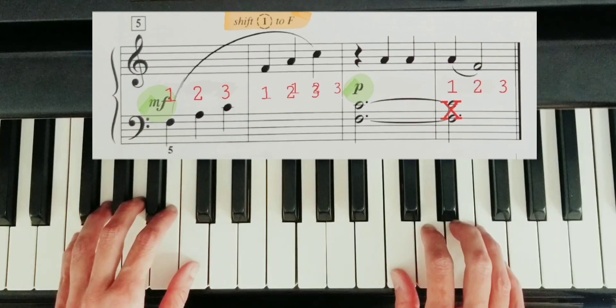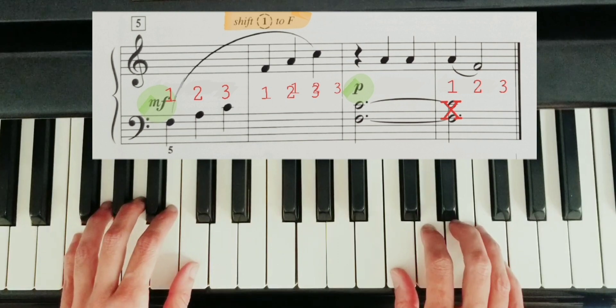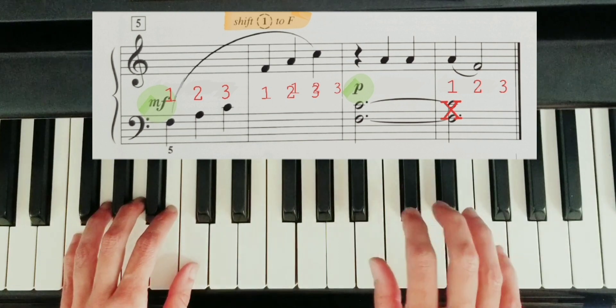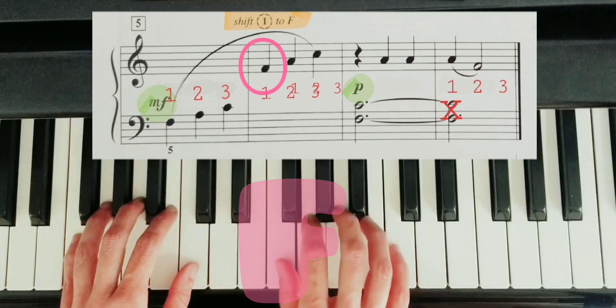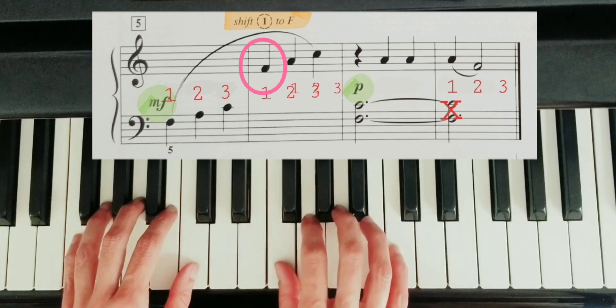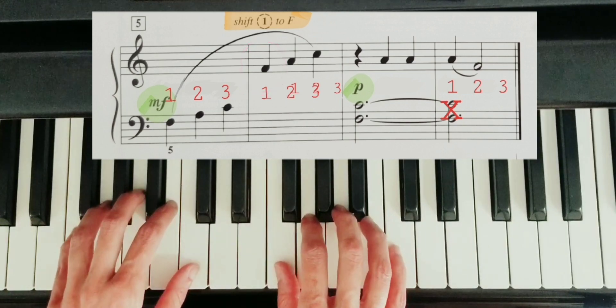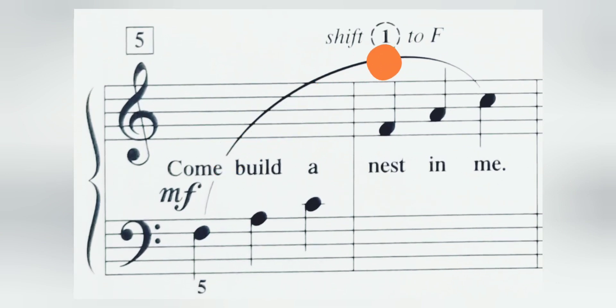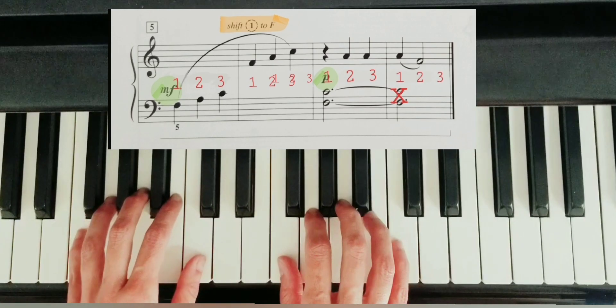On measure five, right hand finger one will shift to F. So we bring it down to F and play legato. Legato!